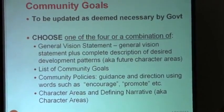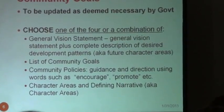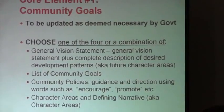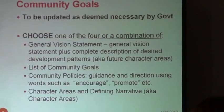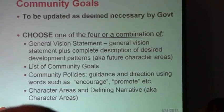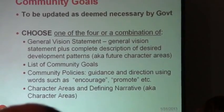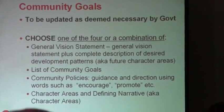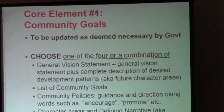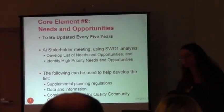Your community goals can look like the following. They can either be a general vision statement, and/or you can pick one of these four options or all of them. They can be a list of community goals, very similar to when you did your partial update. Or they can consist of a list of community policies — encourage and promote something you would like to happen in the community. Or you can go full and develop character areas and define a narrative, just like you did previously in your comp plans and partial updates. So that's the community goals element, required by everybody.